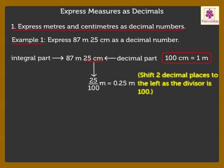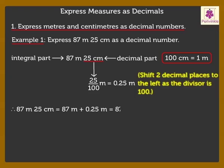Step 4: Add the integral part and the decimal part. Hence, 87 meters 25 centimeters is equal to 87 meters plus 0.25 meters, which is equal to 87.25 meters.